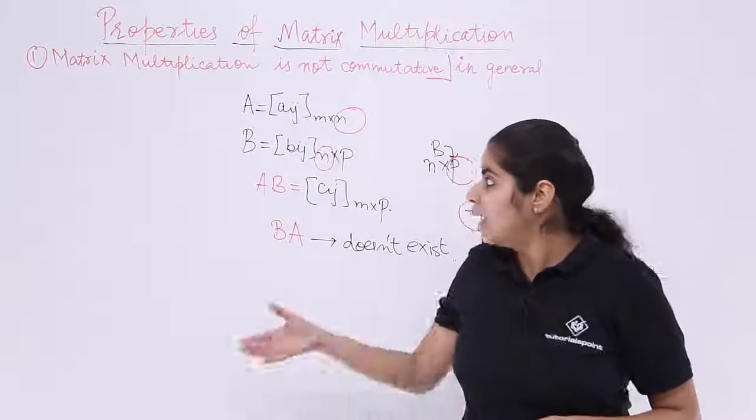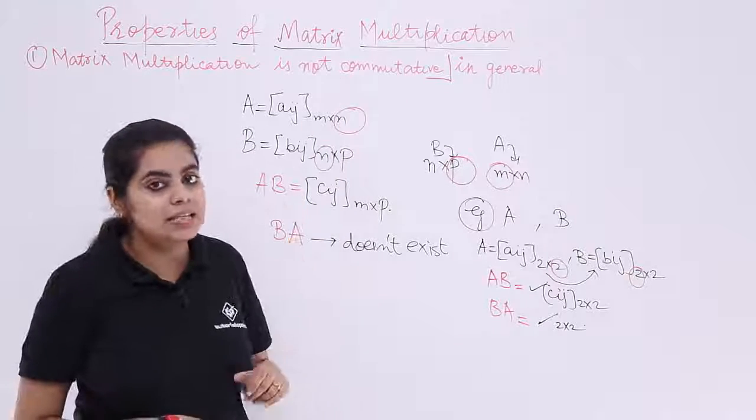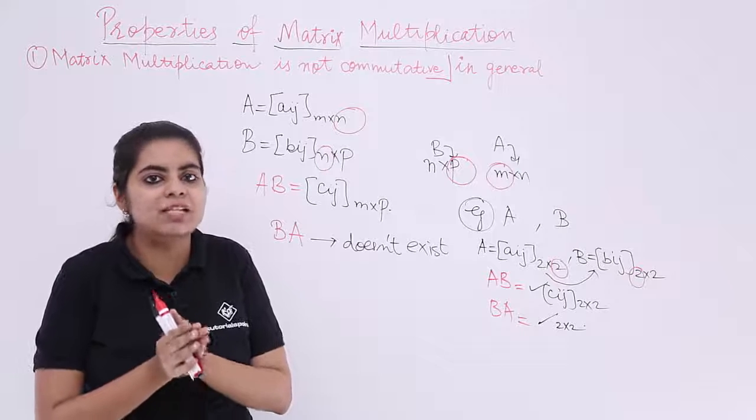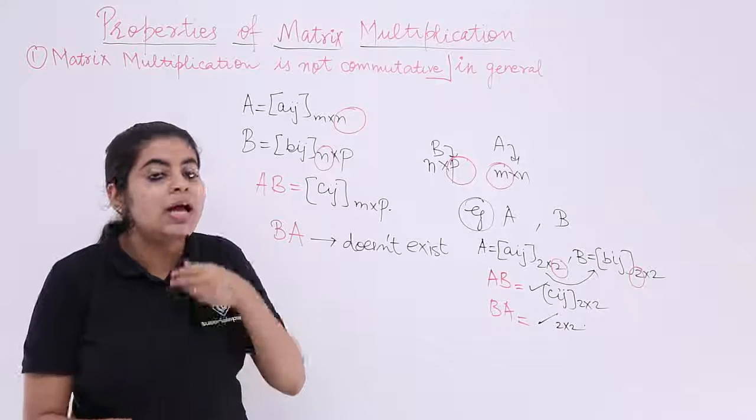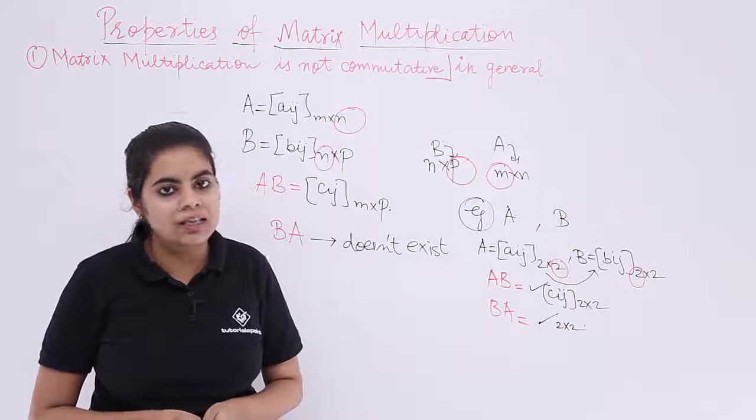Otherwise, commutativity in general case is not followed. That is what this property says, that yes, commutativity in general case, in case of matrix multiplication, is not followed. Only and only when it is followed, when the order is same, when the matrices are equal.